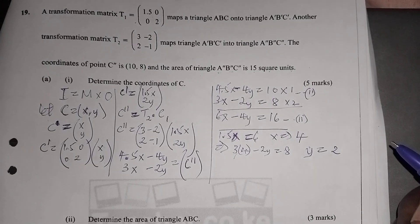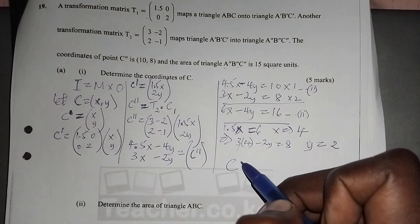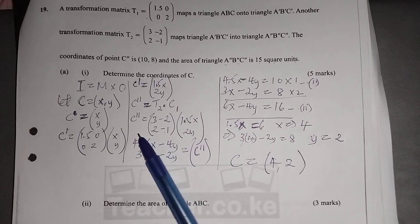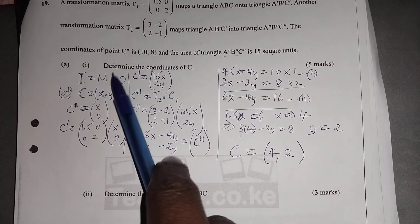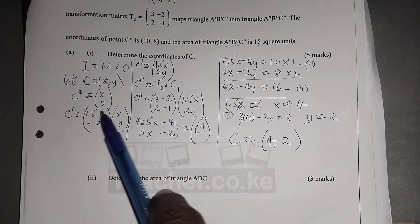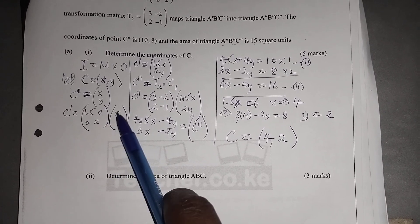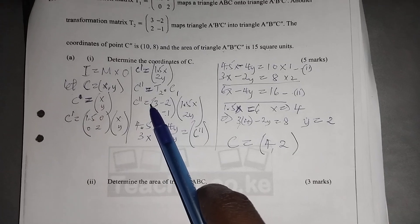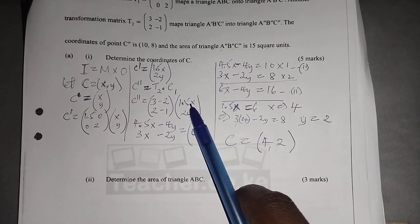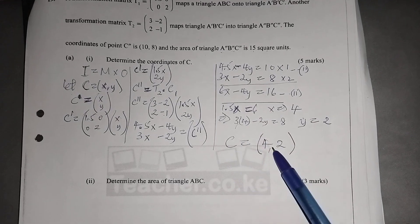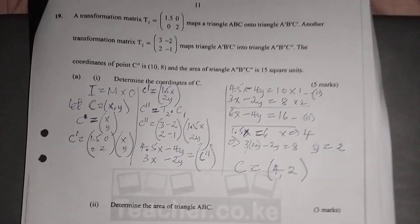Substituting X = 4 into 3(4) − 2Y = 8 gives Y = (12 − 8)/2 = 2. So the coordinates of C are (4, 2). The approach is: apply the first matrix to the object X, Y to get C', then apply the second matrix to C' to get C'', then solve the equations.